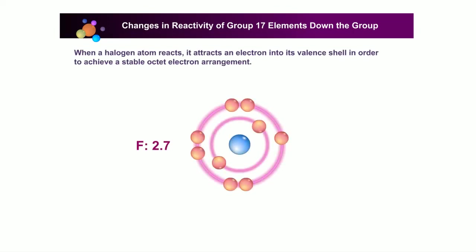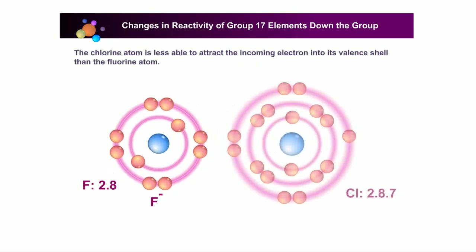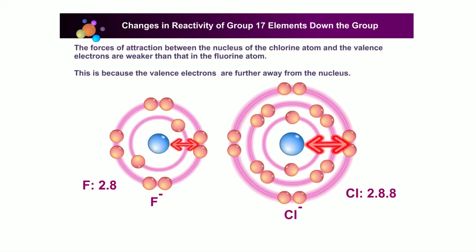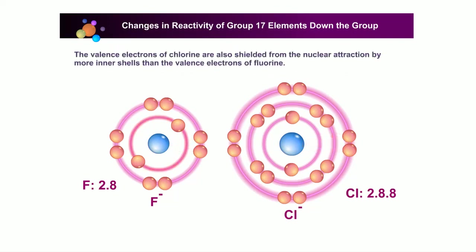Let us find out why chlorine is less reactive than fluorine. When a halogen atom reacts, it attracts an electron into its valence shell to achieve a stable octet electron arrangement. The chlorine atom is less able to attract the incoming electron into its valence shell than the fluorine atom, because the forces of attraction between the nucleus and the valence electrons are weaker — the valence electrons are further away from the nucleus and shielded from the nuclear attraction by more inner shells.